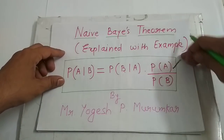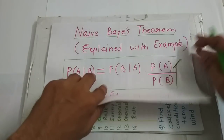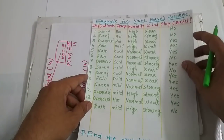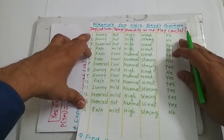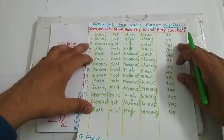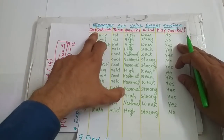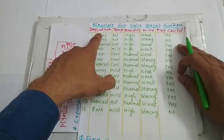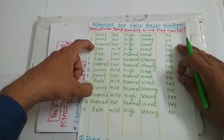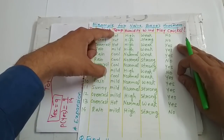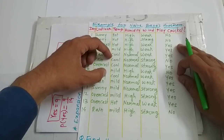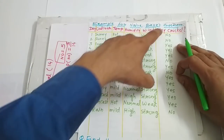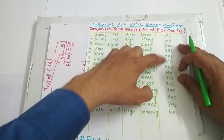Let us start with a simple example to understand the working of Naive Bayes theorem. We will discuss a famous example you might have already seen. This is data given to us which talks about different attributes: day, whether it is 1, 2, 3, 4, up to 14 days. Next attribute is outlook — whether it is sunny, overcast, or rain. Next is temperature — whether it is hot, cool, or mild. Then humidity — whether it is high or normal. Wind — weak or strong. And whether to go for playing cricket or not — either yes or no.